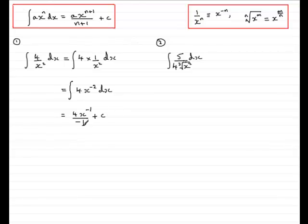Now we need to clean this up. We've got 4 divided by minus 1, which is basically negative 4. So we'll write that, make sure you put your minus out the front here. Minus 4 then, multiplied by x to the minus 1 plus c.